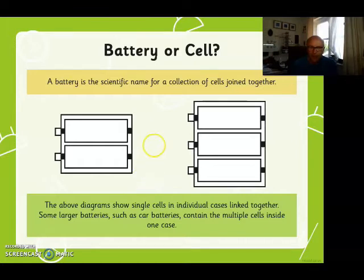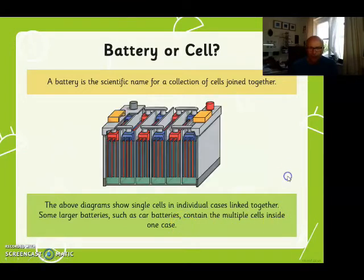So battery is the scientific name for a collection of cells joined together. So if you look at these two diagrams, this is one cell, this is one cell, and together they make a battery. This battery has three cells. And in larger batteries such as car batteries, there's an outer case which contains all the individual cells.